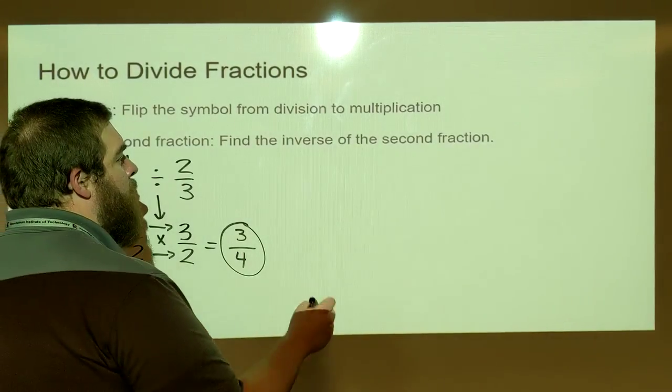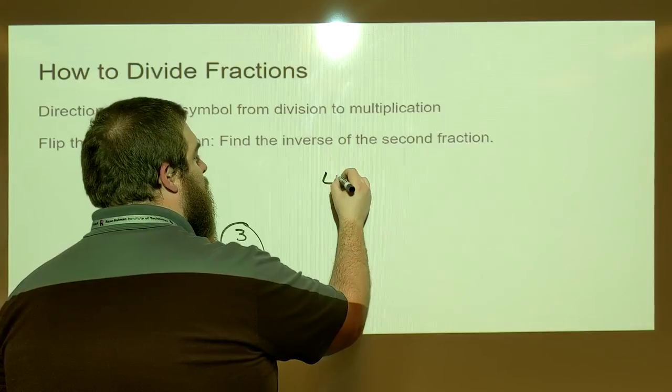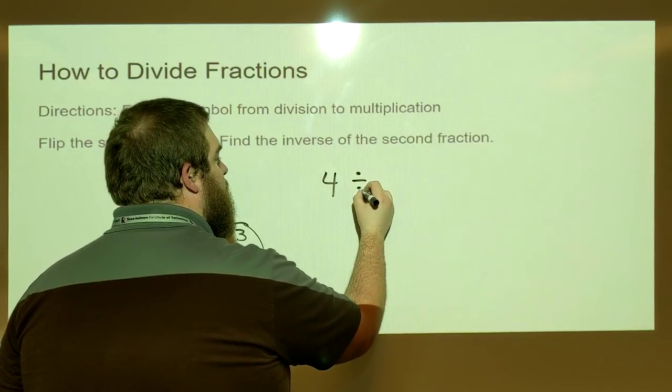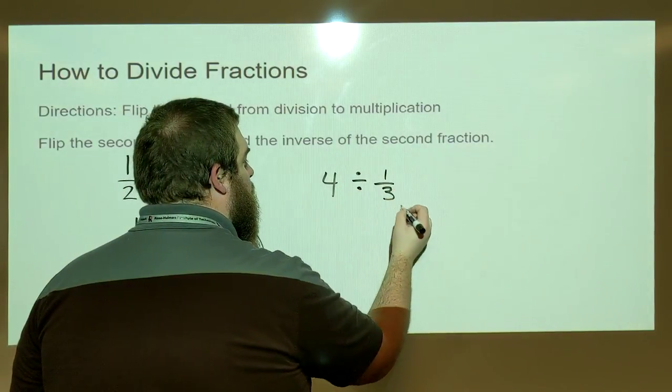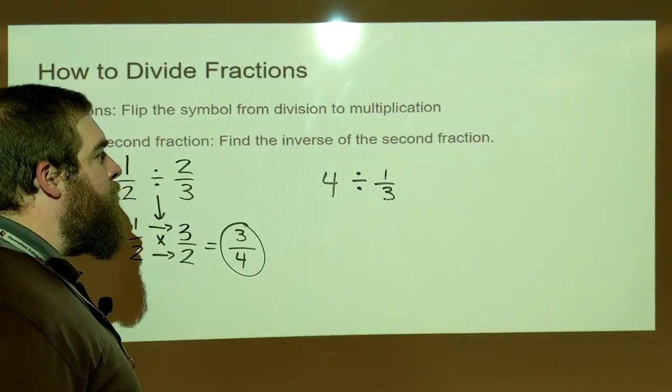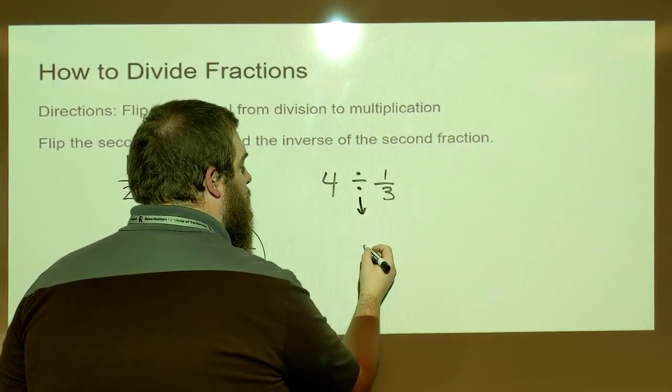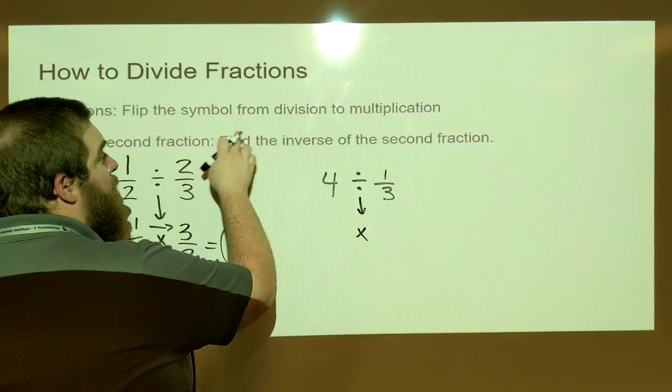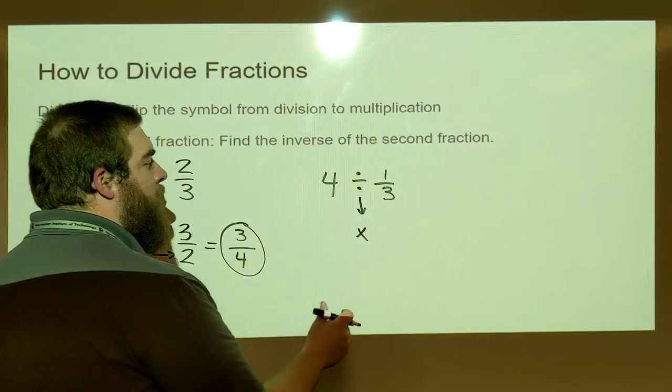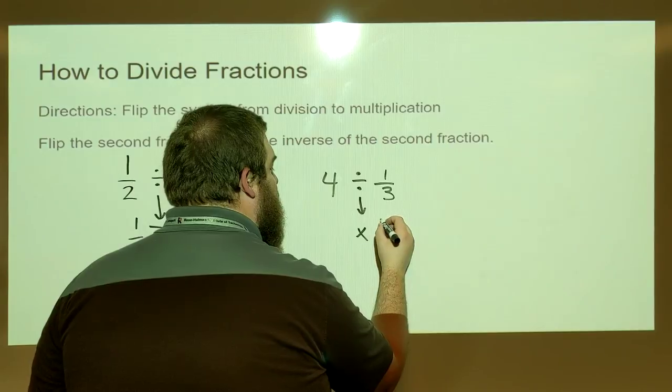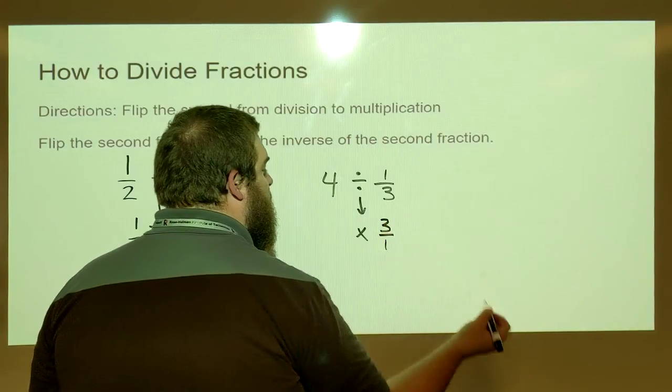Or if we had a whole number, let's say that it's four divided by one-third. What we would do here is first we need to rewrite this where we have our division symbol turning into a multiplication symbol and then we find the inverse or flip the second fraction.